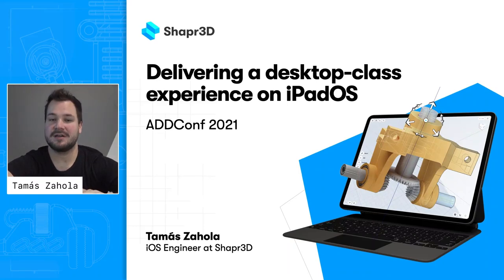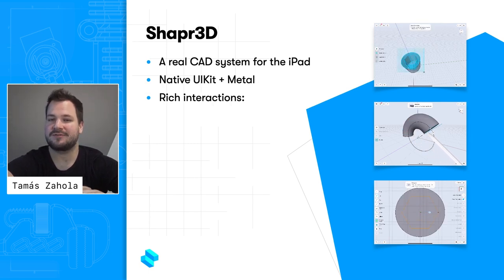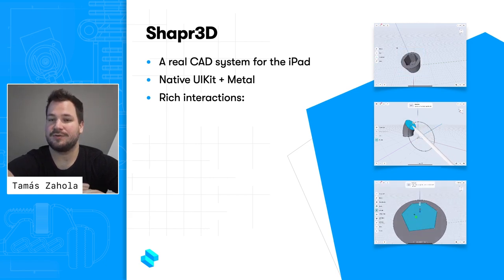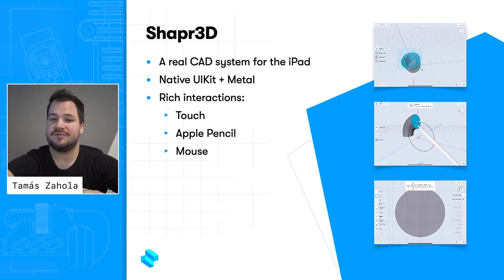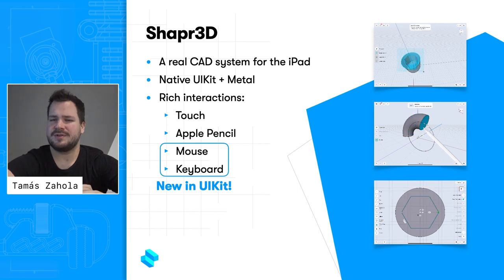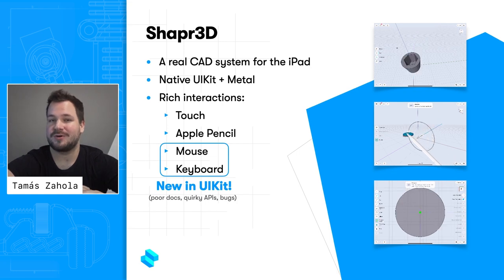Hi, I'm Tomás Zahola, an iOS engineer at Shapr3D. At Shapr3D, we're making a professional CAD system for the iPad, which is built with UIKit and Metal. We're approaching CAD from a UX-first perspective, and we've spent a great deal of effort to synthesize a coherent experience from a set of interactions like touch gestures, Apple Pencil interactions, and more recently mouse and keyboard inputs. These last two posed unique challenges due to their somewhat poor documentation and API quirks, so we've decided to share a few tips and tricks we've come across while implementing their support.